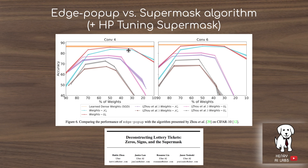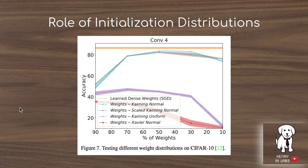A chart shows the performance gains of the Edge Popup algorithm compared to the Supermask from Deconstructing Lottery Tickets. The paper also performs hyperparameter tuning on the Supermask, showing the impact of sampling initial random weights from a normal distribution versus a uniform distribution. Additionally, the exploration of initialization algorithms — Kaiming normal, scaled Kaiming normal, Kaiming uniform, and Xavier normal — reveals that the choice of initialization has an enormous impact on the results of subnetwork pruning.